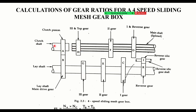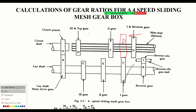The engine power comes in through the clutch shaft. For first gear, the sliding gear on the main shaft is engaged with the corresponding lay shaft gear. The main shaft is the output — this is how power flows through and gives you the gear ratio.